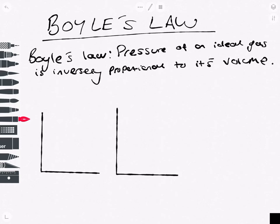So written mathematically, we could say that P is proportional to 1 over V, or that PV equals K, where K is some constant of proportionality.